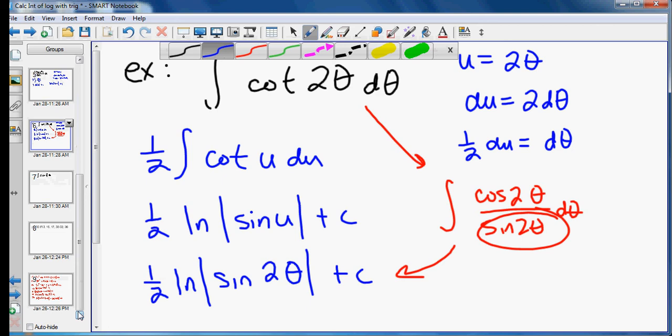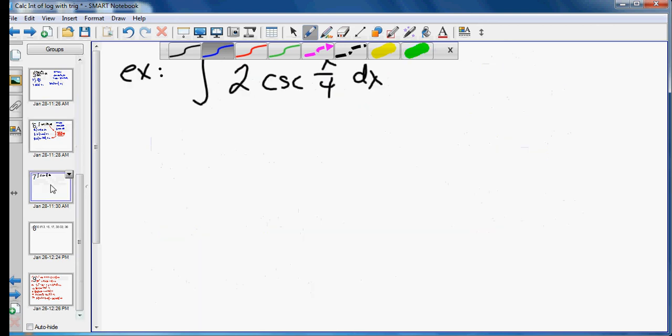One more example. 2 cosecant of x over 4 dx. This one I would definitely recommend you just use the trig rule. Now there is a way to rewrite this so you can get a du over u form. But frankly it's pretty painful. So I wouldn't recommend it. Tangent and cotangent aren't too bad because they transition pretty easily into a fraction of sine over cosine or cosine over sine. But it takes a little more mathematical creativity to make that work with cosecant and secant. So instead we'll just be glad we know the rules.